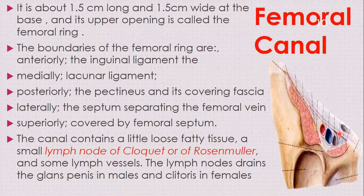Lymph from the anus, the lower vagina, and the vulva also drains into the lymph nodes around this inguinal region — around the femoral artery — including the horizontal lymph nodes that arrange themselves around the inguinal ligament.